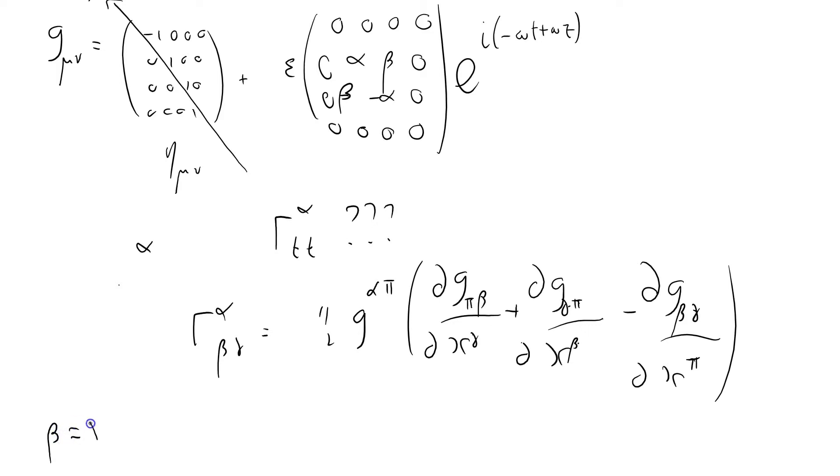However, I'm going to consider the case where beta equals gamma equals t for time. So this equals a half g^{απ}. Because I'm considering only first order, I'm going to replace it with eta, the flat space one. Yes, I can ignore this in terms of the derivatives, but not in the absolute calculation of the Christoffel symbol.